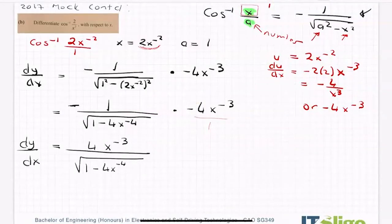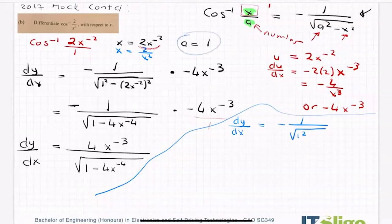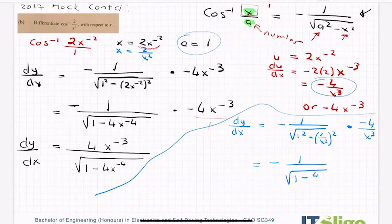If you didn't work with reciprocals, you might do it this way. So dy/dx being equal to, your x in this case would have been 2 over x squared. You would have had minus 1 over the square root of 1 squared, it would still have to be 1 minus 2 over x squared to be squared. And you would still have had to multiply it by this bit differentiated. So it becomes minus 1 over the square root of 1 minus 4 over x to the power of 4 by minus 4 over x cubed.